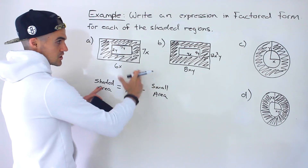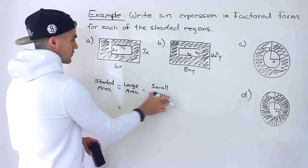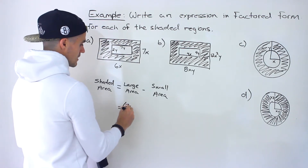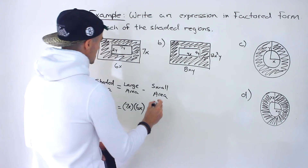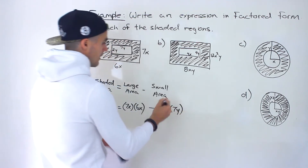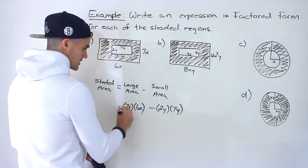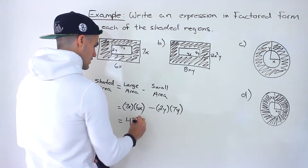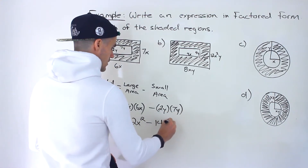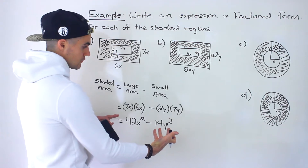We have a large area minus a small area. The large area is 7x times 6x, and the small area is 2y times 7y, since the area of a rectangle is just length times width. Expanding: 7x times 6x gives us 42x², and 2y times 7y gives us 14y². So the expanded expression is 42x² − 14y².